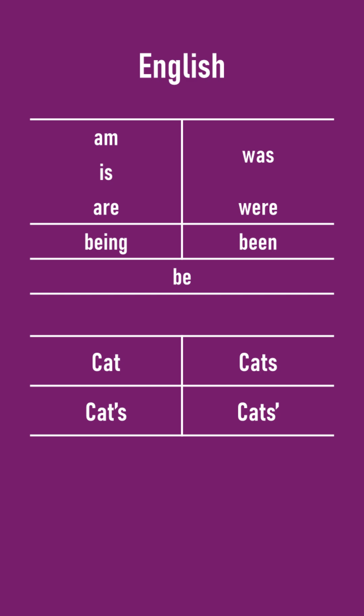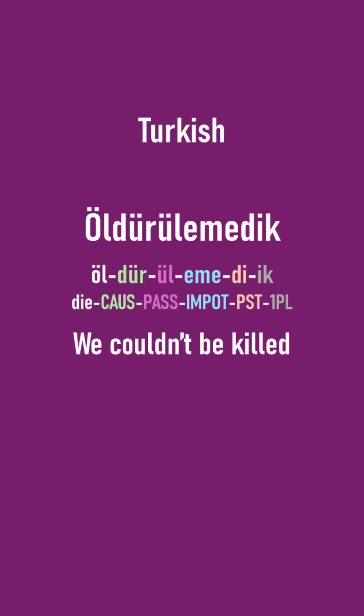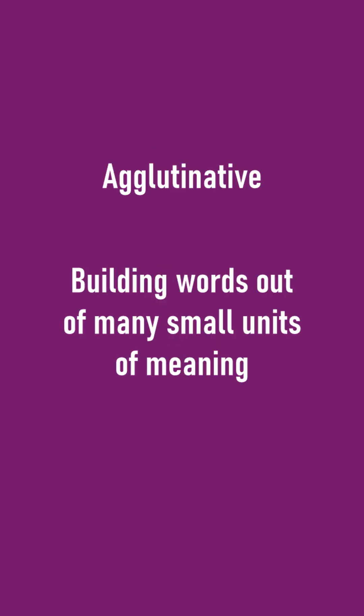But different languages do this to different extents. In English, the ways which we can change words are fairly limited — there aren't many things you can add to make grammatical meaning. Other languages can add a lot more. In Turkish, it's not uncommon to find words with strings of four or five different elements on a word, each adding little grammatical nuances that in English we might require multiple words to express. These are called agglutinative languages.